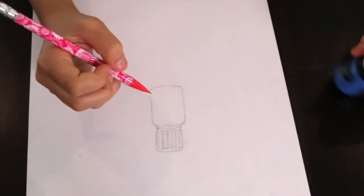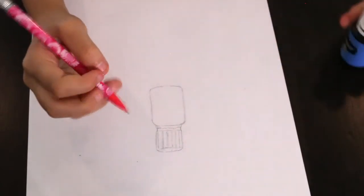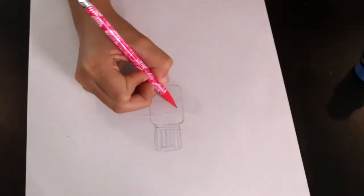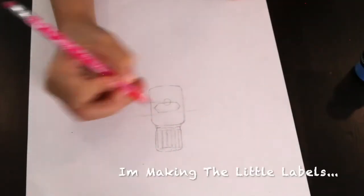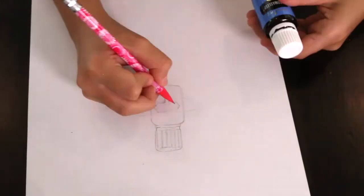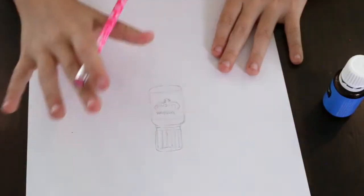Now that's done, I'm going to do the label, which is sort of like a ribbon shape.